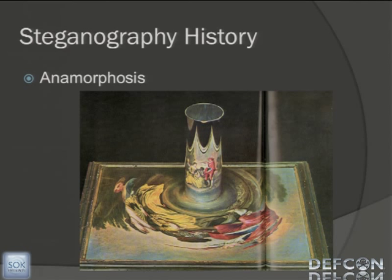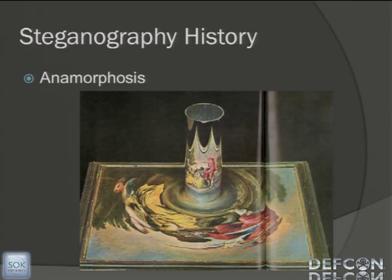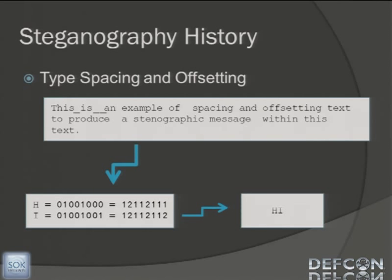Anamorphosis — try saying that ten times fast. That's an image you can look at from one angle and it can be one thing, look at it from another angle and it can mean something totally different. Here you have a mirrored cylinder and you can see what looks like some sort of beverage or food. Type spacing and offsetting is a lot like the null cipher — you have to have a really, really long message in order to get out a really short message, like just 'hi.'